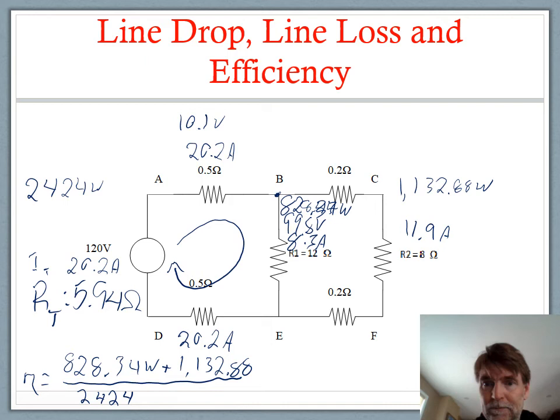And we get 0.809, or 80.9 percent. That is the efficiency of our circuit. 80.9 percent is the power output of those two loads compared to the power input from the power supply.